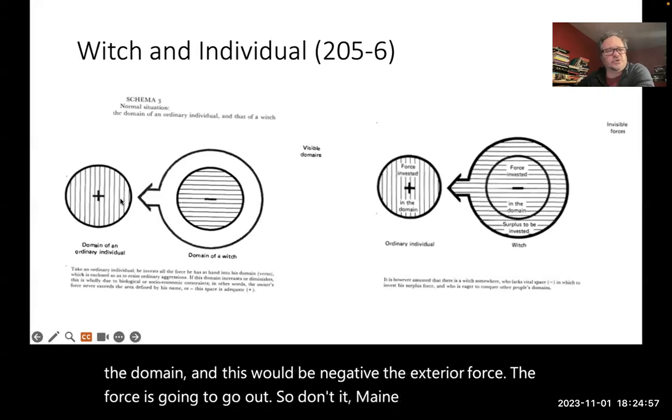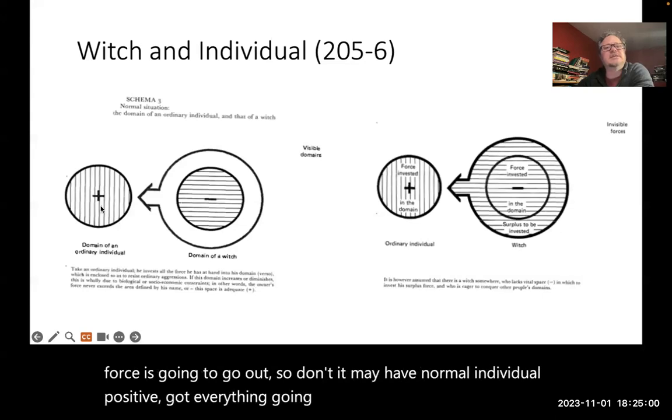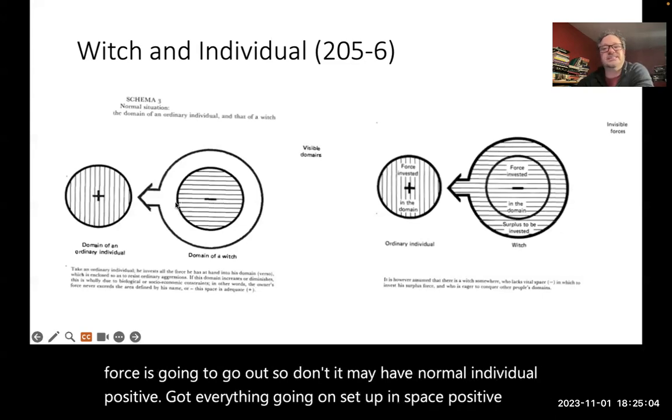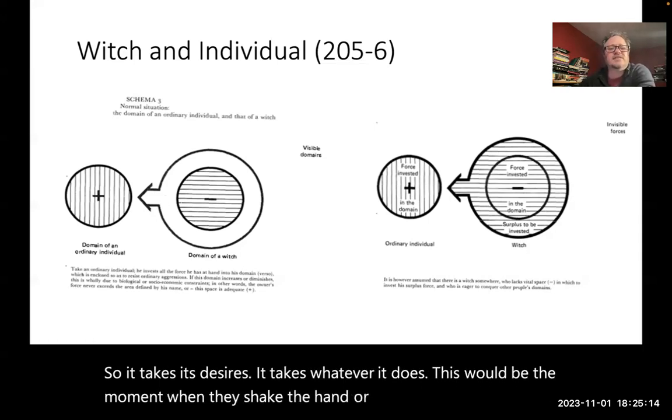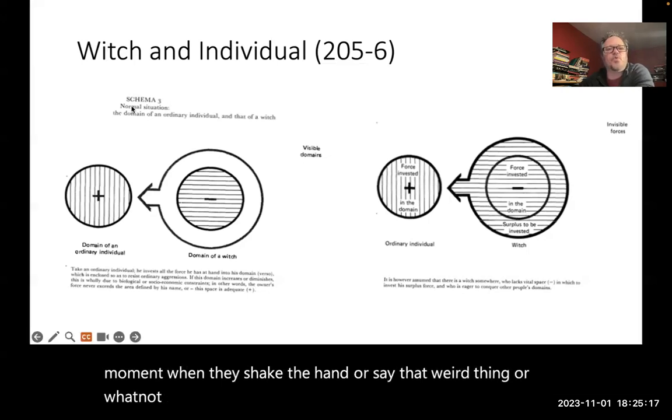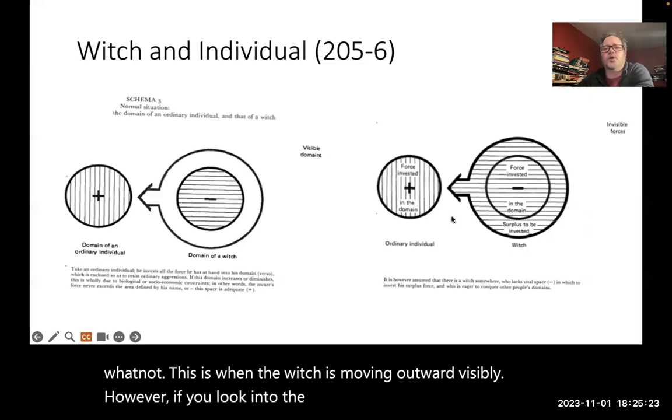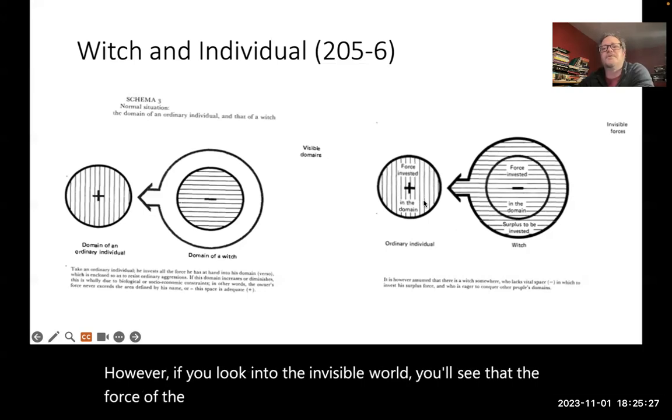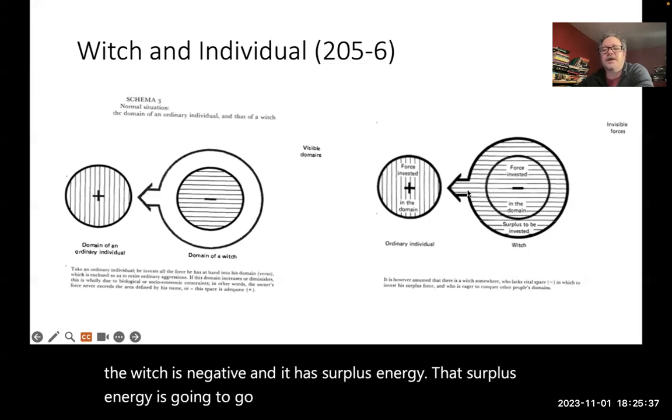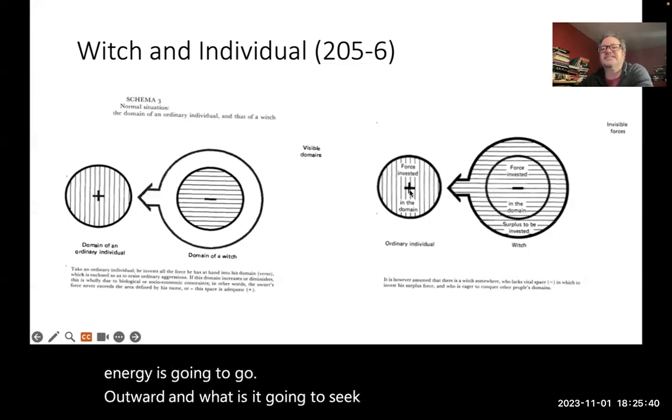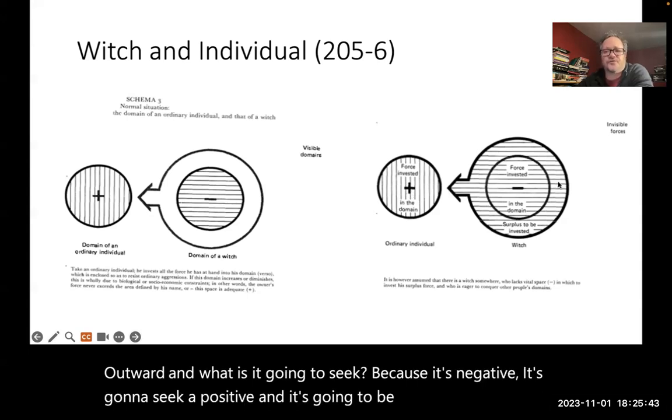So domain of normal individual, positive, got everything going on, set up in space, positive. Now the witch is lacking. So it takes its desires. This would be the moment when they shake the hand or say the weird thing. This is when the witch is moving outward visibly. However, if you look into the invisible world, you'll see that the force of the individual who's ordinary, perfectly set up. The force of the witch is negative, and it has surplus energy. That surplus energy is going to go outward. And what is it going to seek? Because it's negative, it's going to seek a positive. And it's going to pull from that positive.